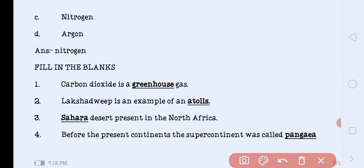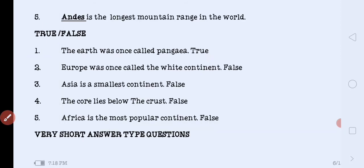Next question. Before the present continents, the super continent was called Pangaea. The super continent before our present continents was called Pangaea. Next, Andes is the longest mountain range. The longest mountain range in the world is Andes.